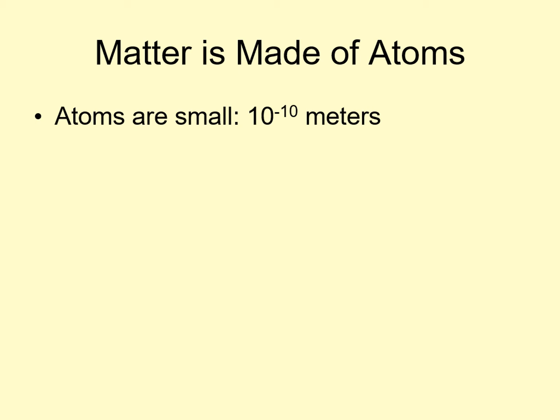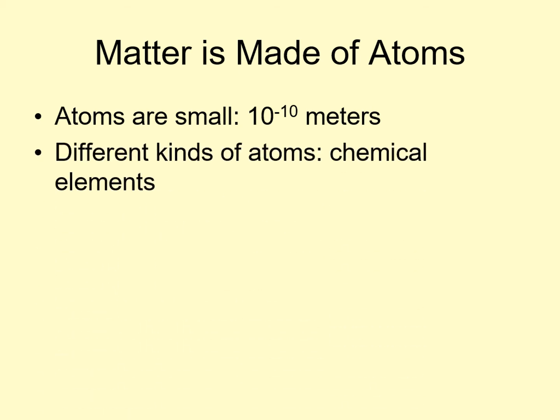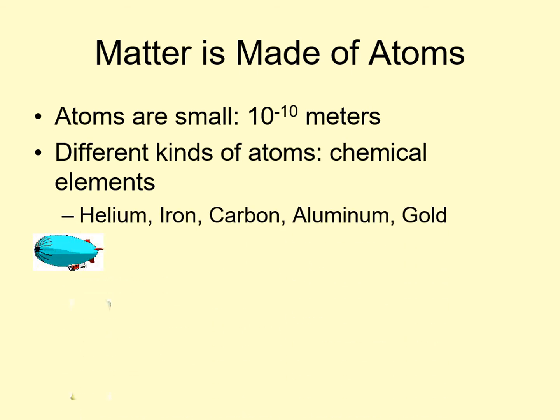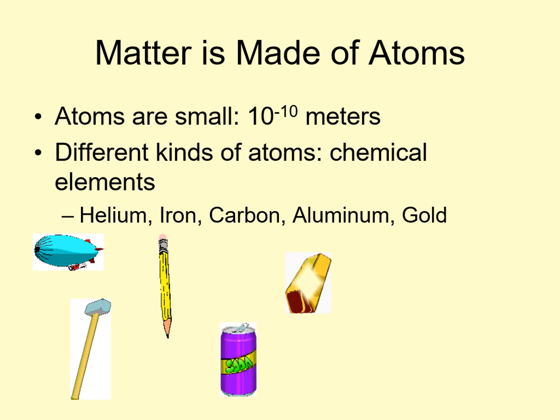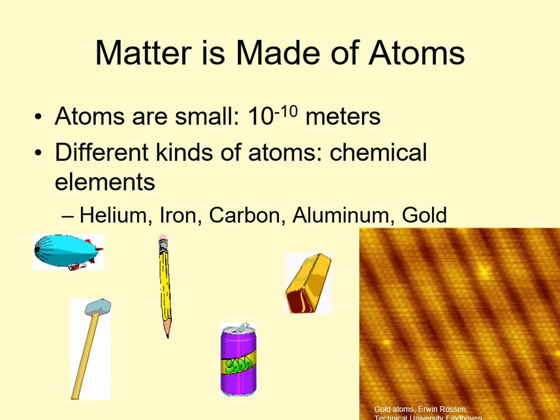Chemists also realized early on that not all atoms are alike. We now know of over 100 different kinds of atoms known as the chemical elements. Some of the elements we run into often include helium, iron, and carbon. Do you know where the purest carbon in a pencil is? Think about it, and I'll tell you shortly. There's also aluminum and gold. This last image is also gold, but seen at high enough magnification that you can just begin to see the individual atoms.